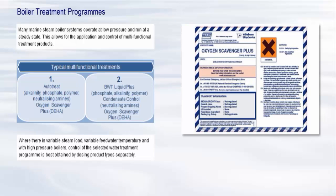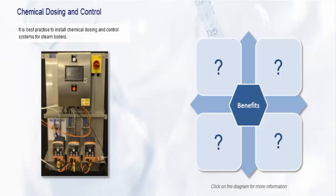Where there is variable steam load, variable feed water temperature and with high pressure boilers, control of the selected water treatment program is best obtained by dosing product types separately. It is best practice to install chemical dosing and control systems for steam boilers. Click on the question marks to see the benefits of such a system. This chart describes how good control of water treatment applications can optimize cost and improve system protection.